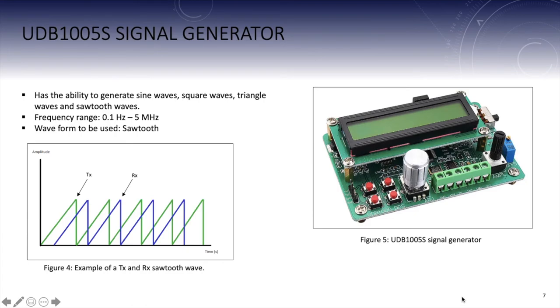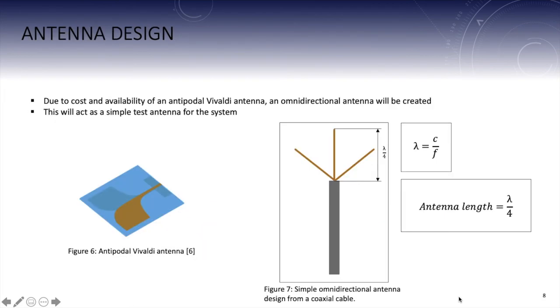Figure 4 demonstrates the difference between transmitted and received sawtooth signals. Due to the cost and availability of an antipodal Vivaldi antenna, I will be using an omnidirectional antenna. I know that using an omnidirectional antenna for GPR does not make sense as omnidirectional antennas disperse radio waves in radial directions.